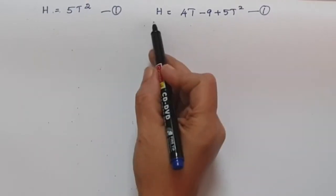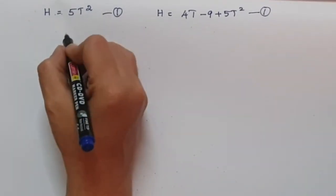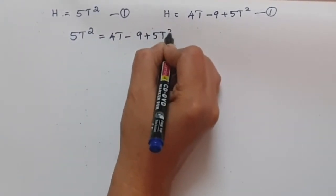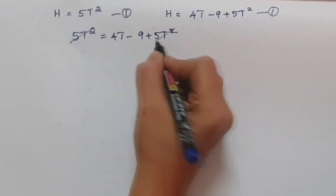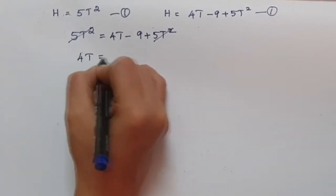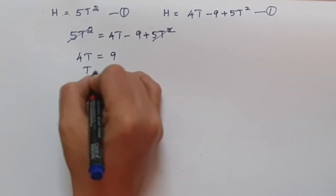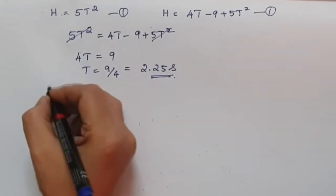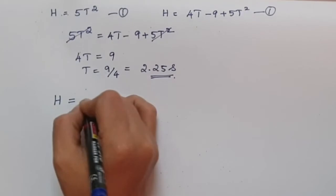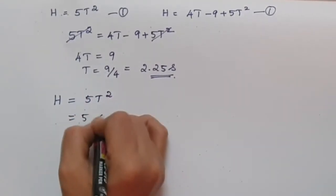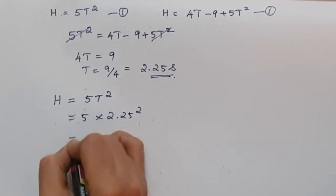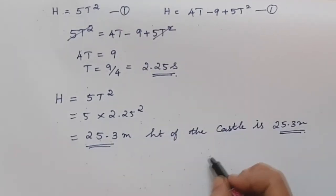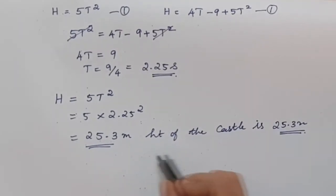Both equations equal h, so equating them: 5t² = 5t² + 4t − 9. The 5t² terms cancel, giving 4t = 9, so t = 9/4 = 2.25 seconds. To find the height of the castle: h = 5t² = 5 × 2.25² = 25.3 metres. Therefore, the height of the castle is 25.3 metres.